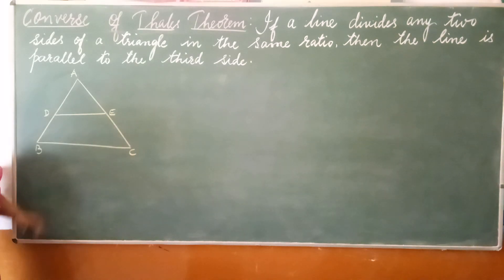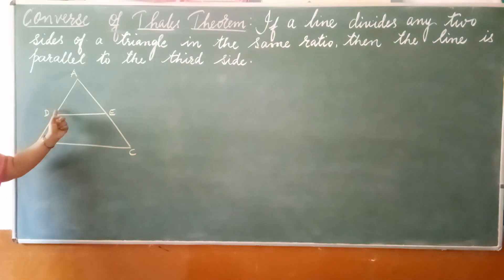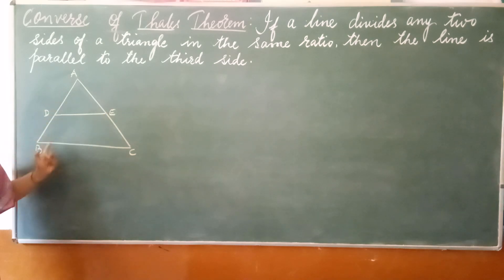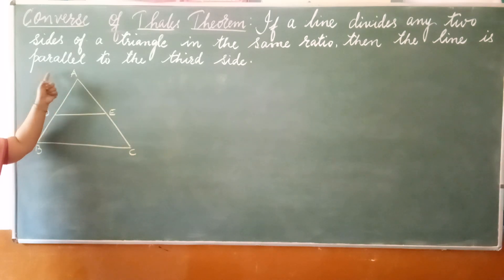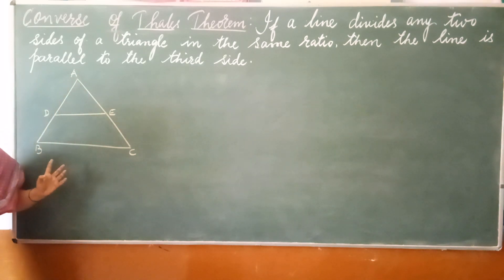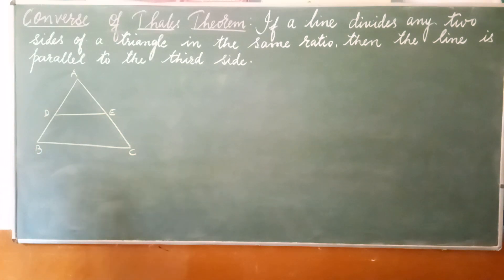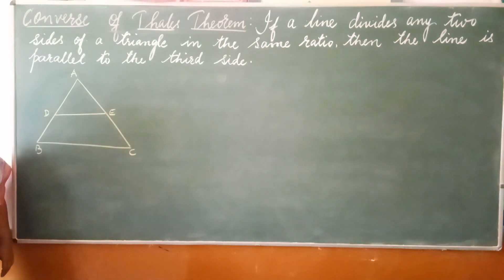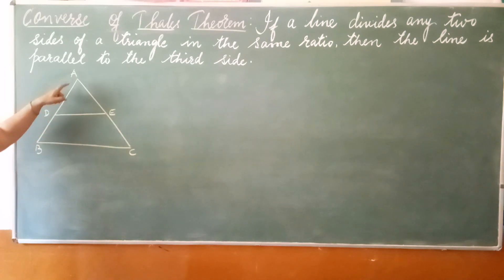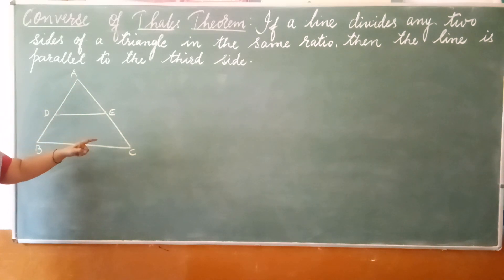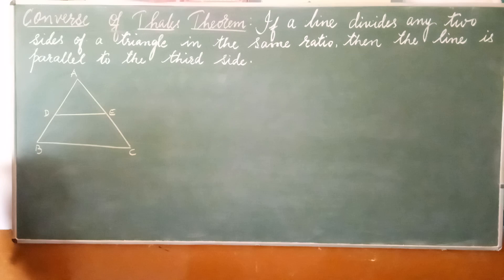What does it state? If a line divides any two sides of a triangle in the same ratio — meaning AD by DB is equal to AE by EC — then the line DE is parallel to the third side BC. Whichever side is not divided, that we consider as the third side. If a line divides the other two sides in the same ratio, then the line is parallel to the third side. This is the statement of the converse of Thales theorem.